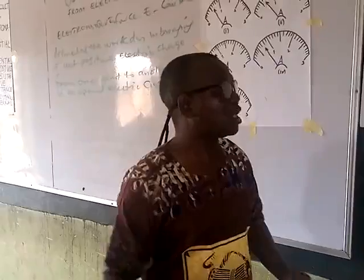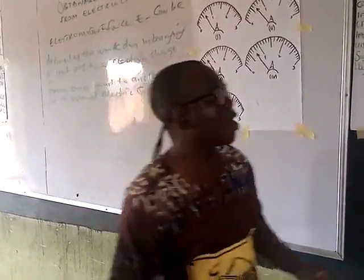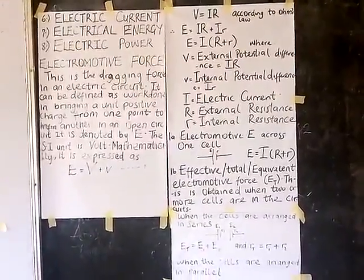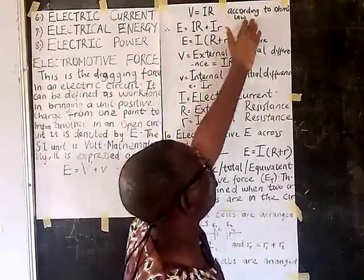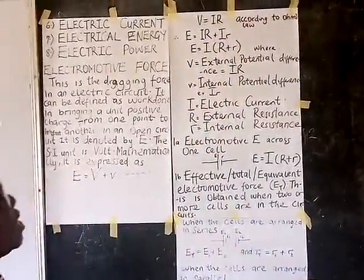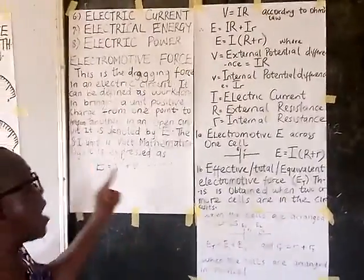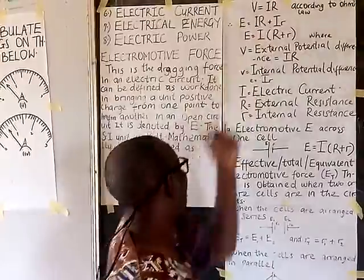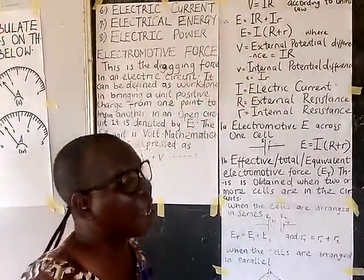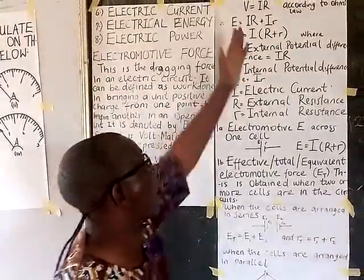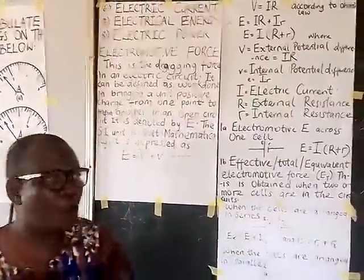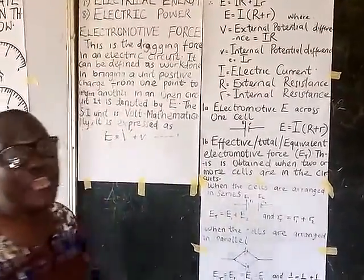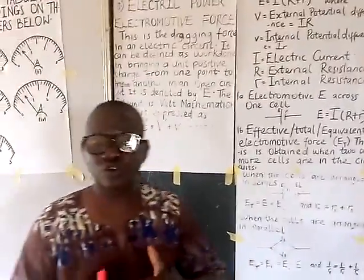According to Ohm's law, potential difference V can be expressed as the product of current and resistance. So external potential difference can be replaced with I times capital R, and internal potential difference with I times small r. Factorizing I gives: E = I(R + r).